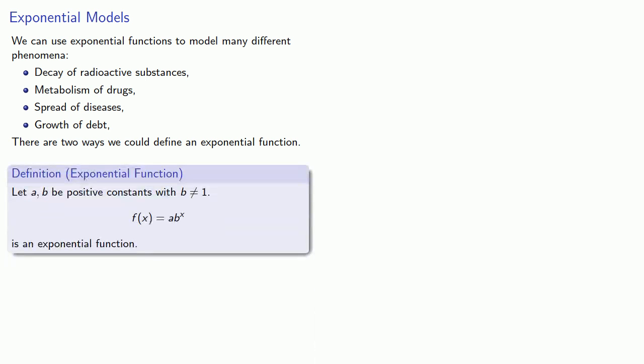First, let a and b be positive constants with b not equal to 1. Then f(x) = ab^x is an exponential function.